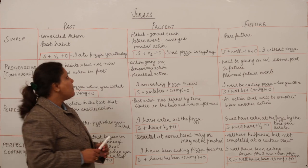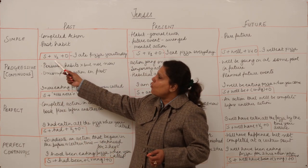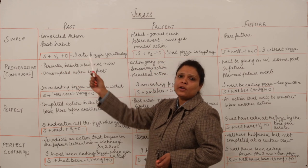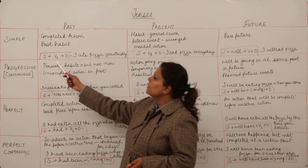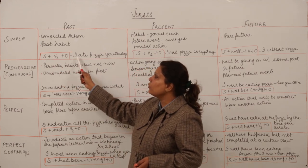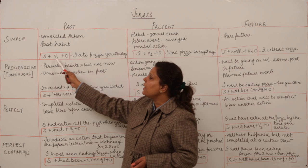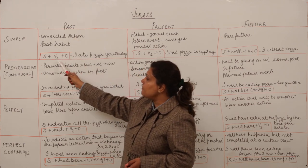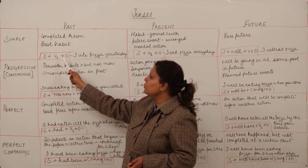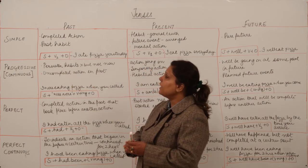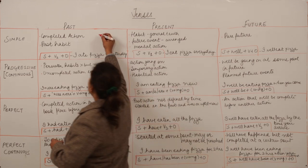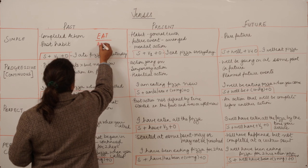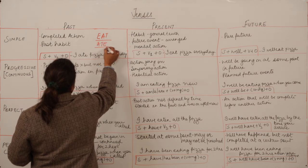Let's start with the past tense. First, study the form of the sentence — this will also help you in your reordering assignment. First of all, the subject (noun or pronoun) comes, then the verb. In the past simple form, the second form of the verb is used. For example, the verb 'eat': its second form is 'ate' and third form is 'eaten'.